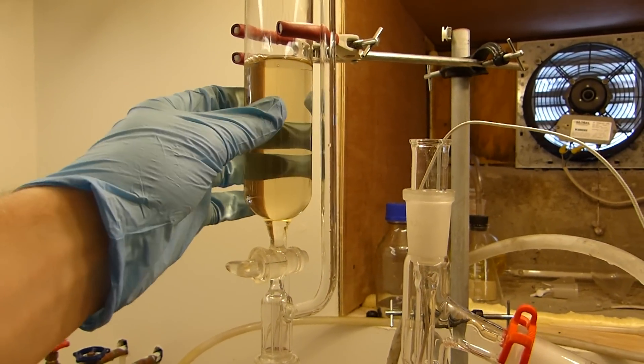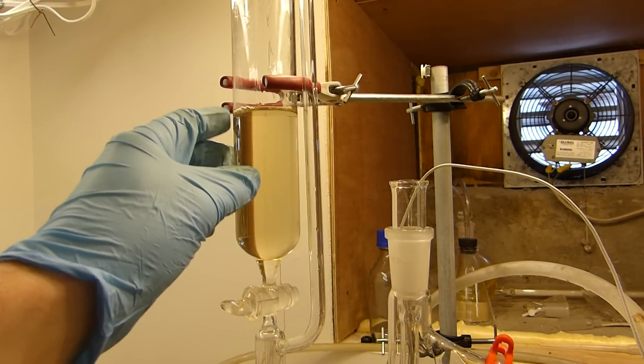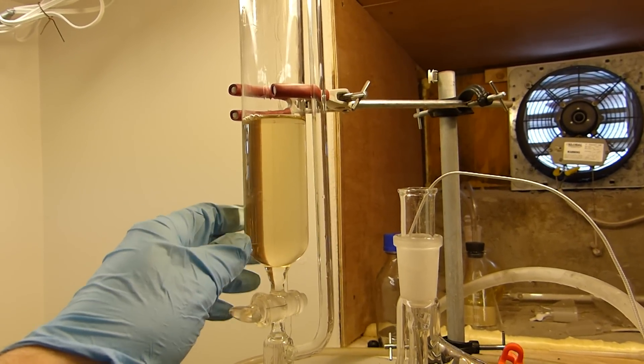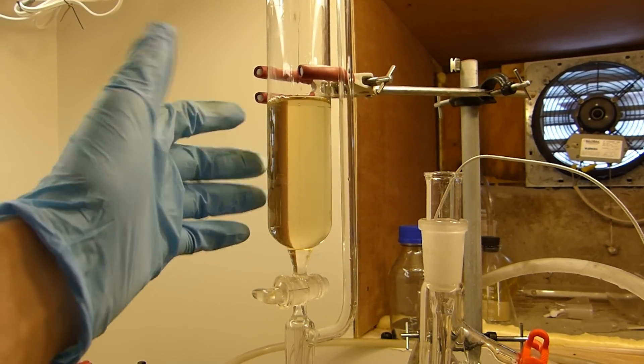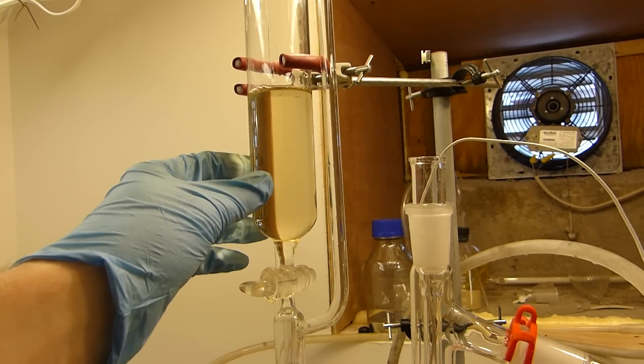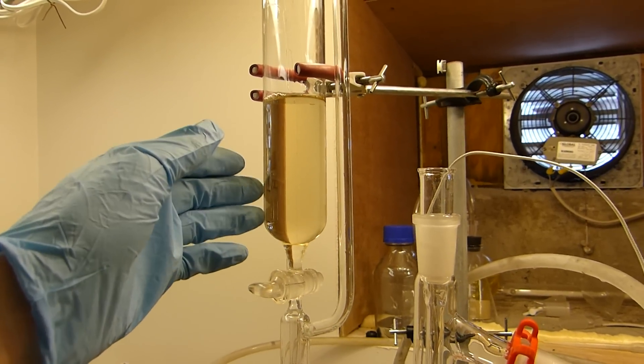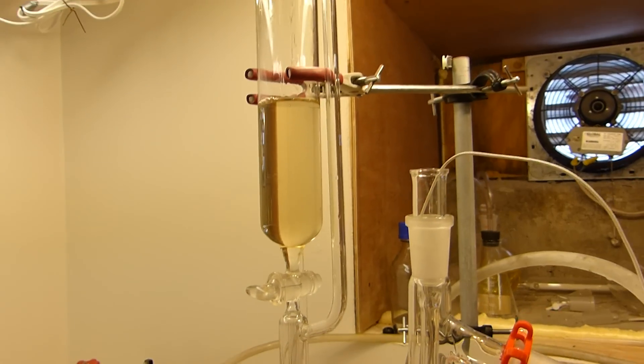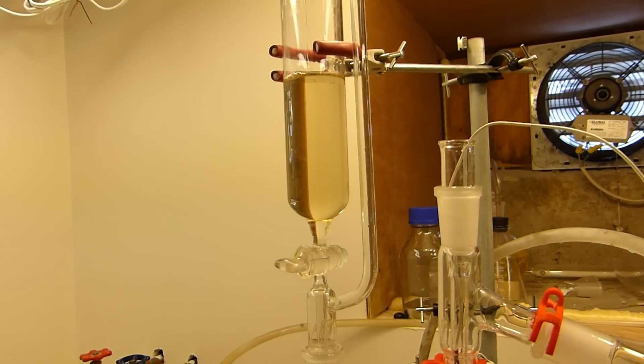This is 264 grams of sulfuric acid, and that's compensated for both a 1.25 times excess with respect to sodium acetate, which helps further dry the acetic acid, as well as it's been compensated for its concentration, which is I believe somewhere between 93 and 95 percent by last titration.